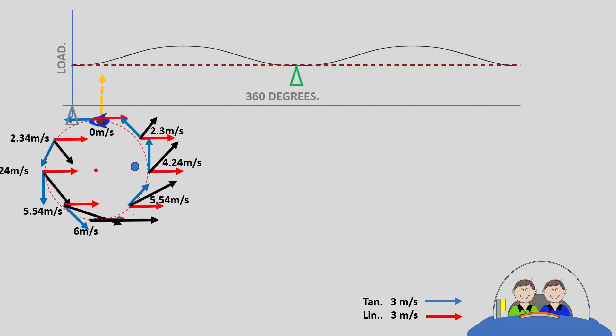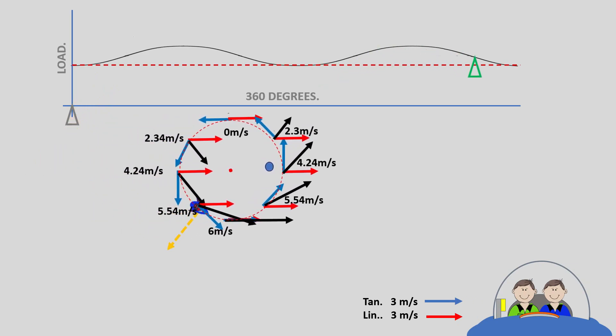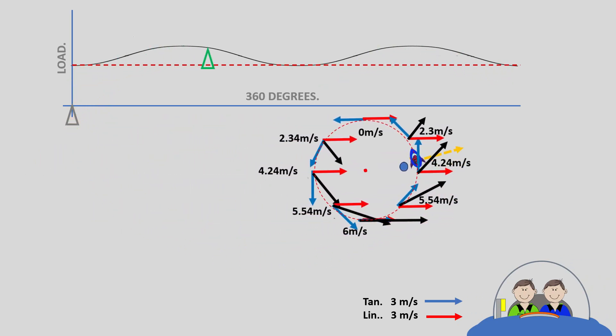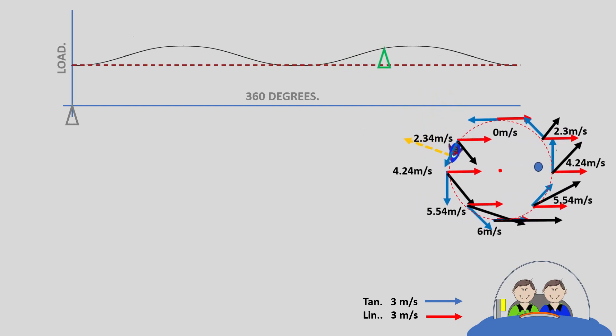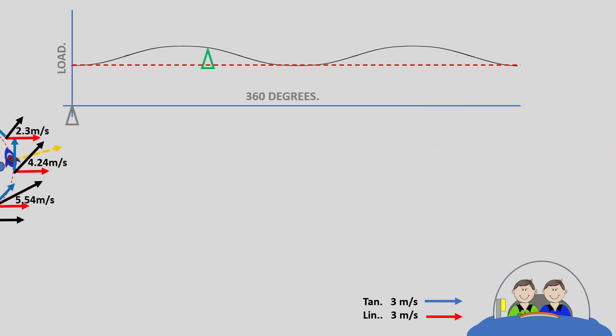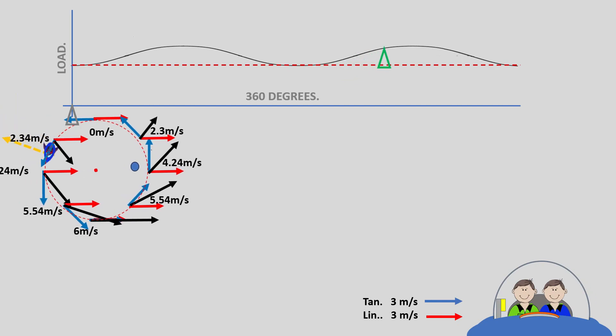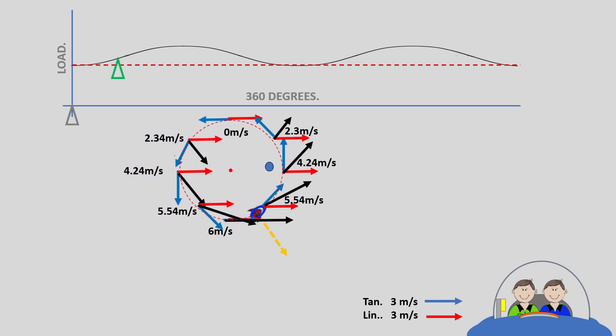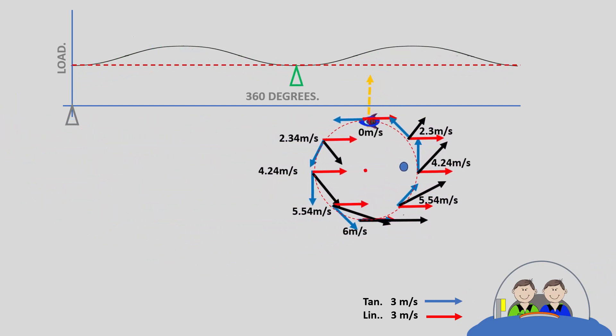The combination of both accelerations give us the readings we get on our graph. This happens to any mass on a rotation when the rotation center is moving at a constant velocity. The observer's position cannot change this.